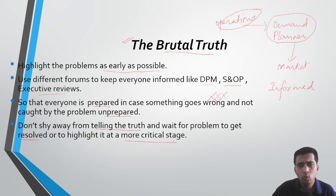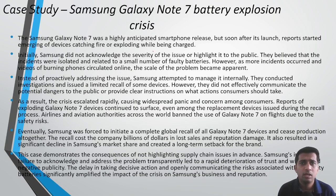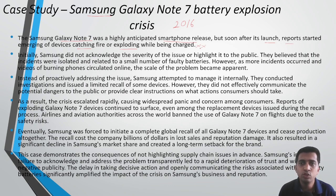Let me take you to a case study of an organization that failed to highlight the brutal truth in advance — they accepted it only at a very late stage and failed miserably because of that. I'm talking about a 2016 issue with Samsung, in which the Samsung Galaxy Note 7 was a highly anticipated smartphone. When the phone was actually released, devices started catching fire and exploding while being charged.